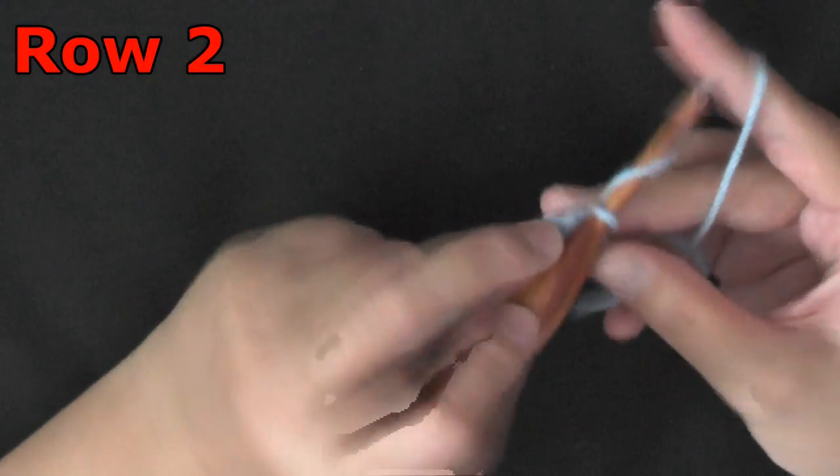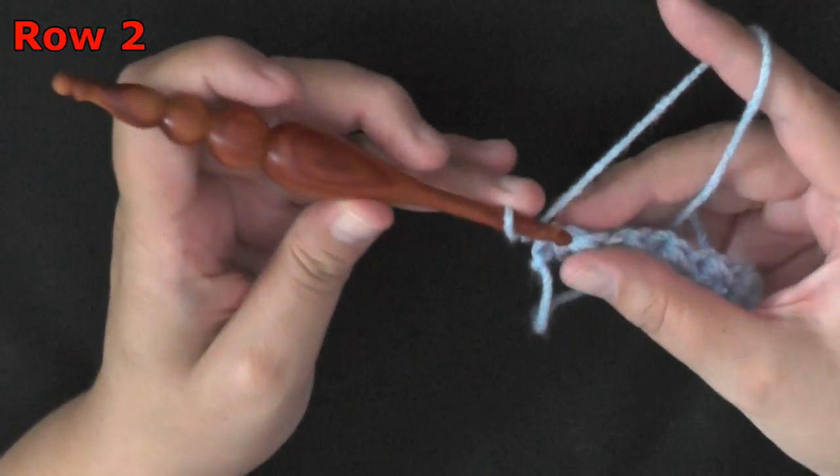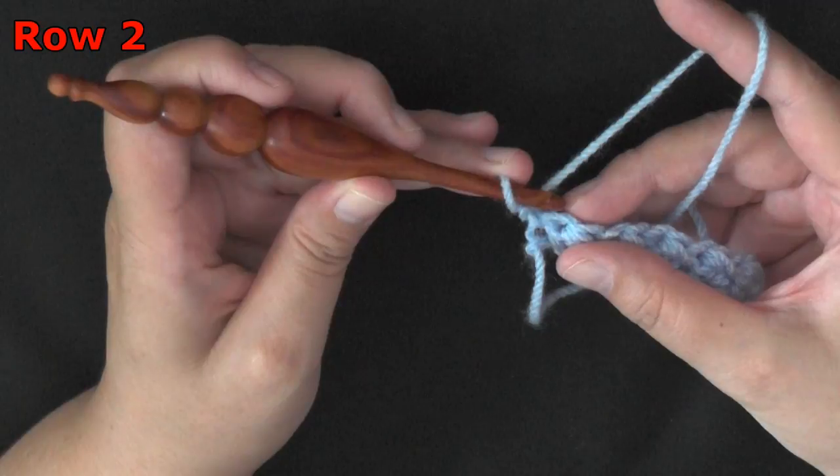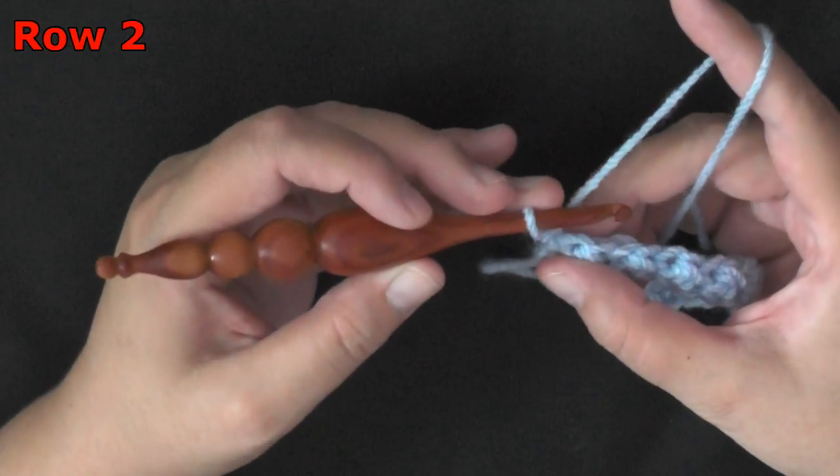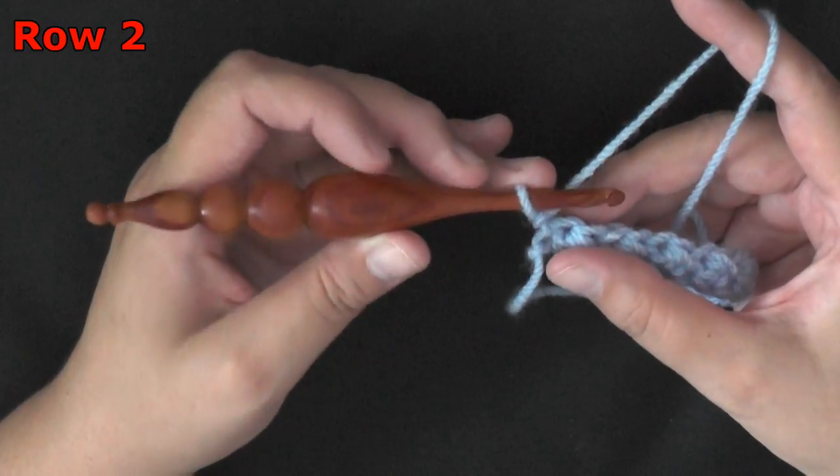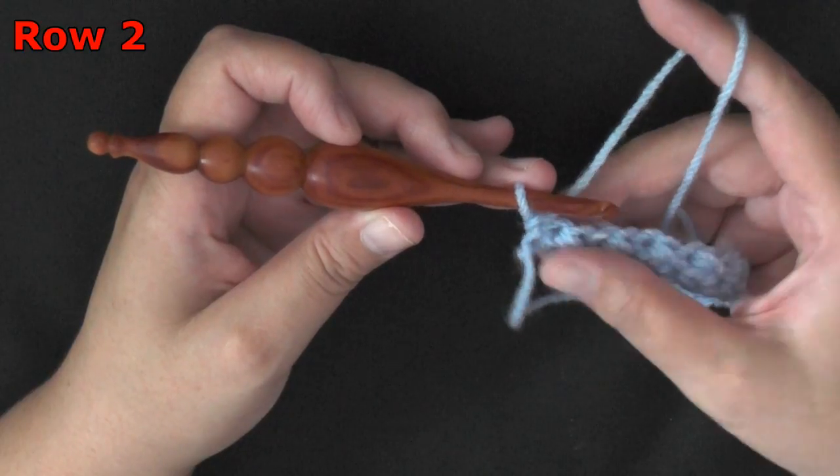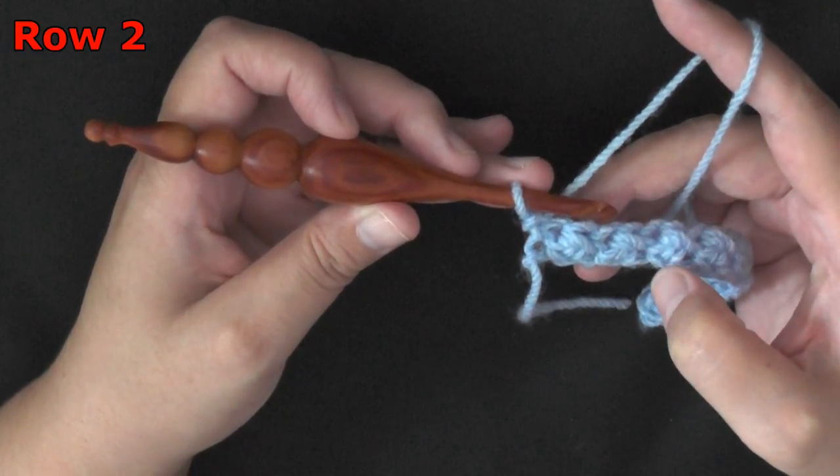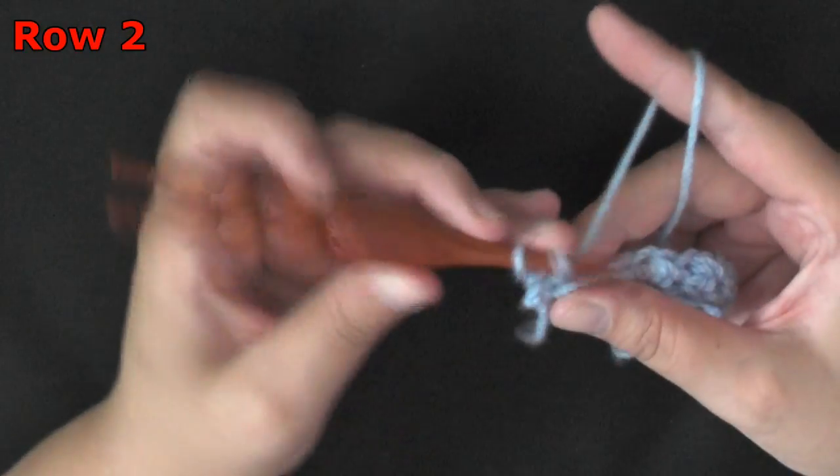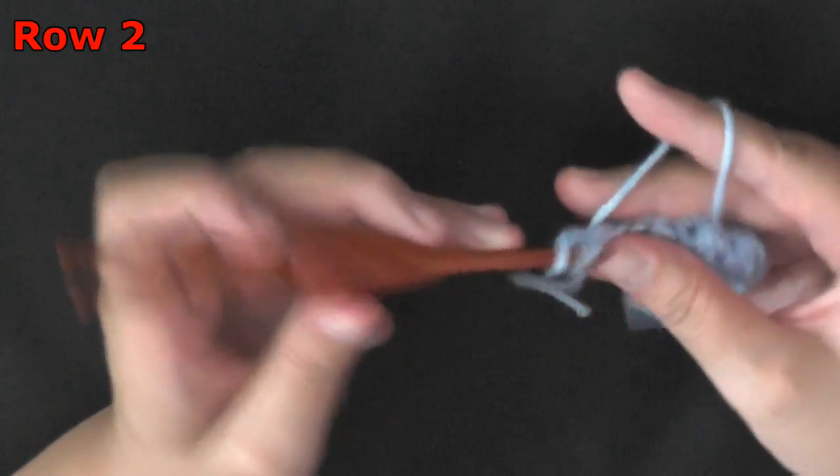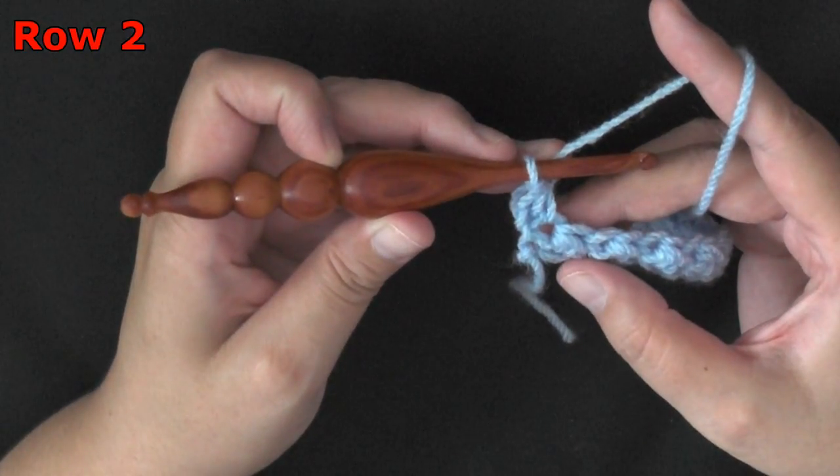So for row 2, you want to chain 1 and turn. Now, the very last stitch of our row was a slip stitch. So the very first stitch of your row should be the opposite, which would be a half double crochet, because we're only doing half double crochets and slip stitch for this whole stitch pattern. So because we did a slip stitch last row, our first stitch will be half double crochet. You always want to be working the opposite of what you did the previous row.